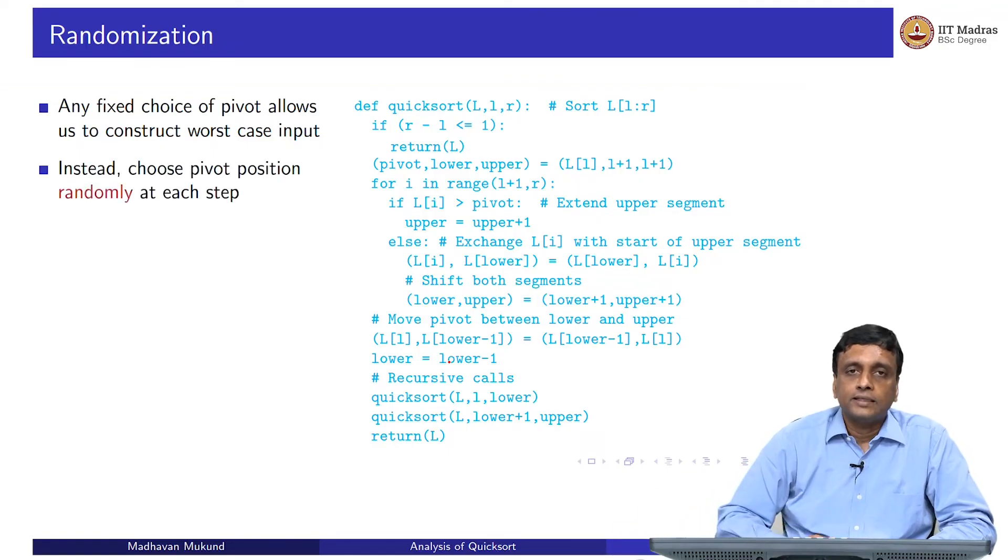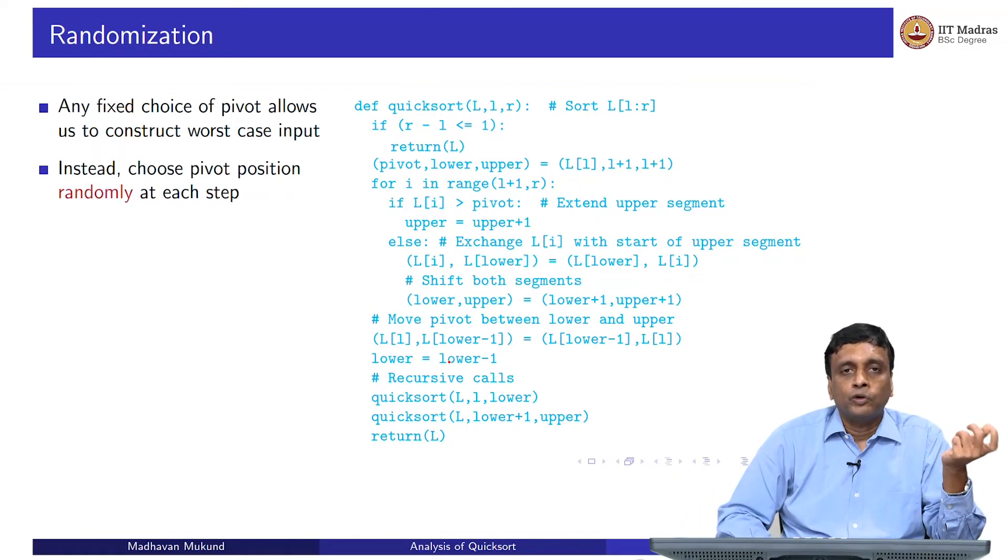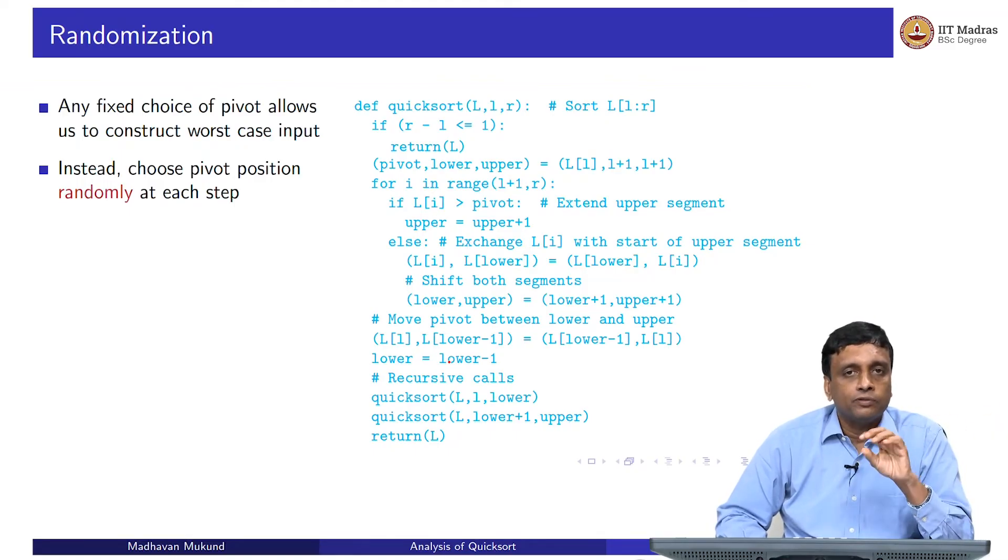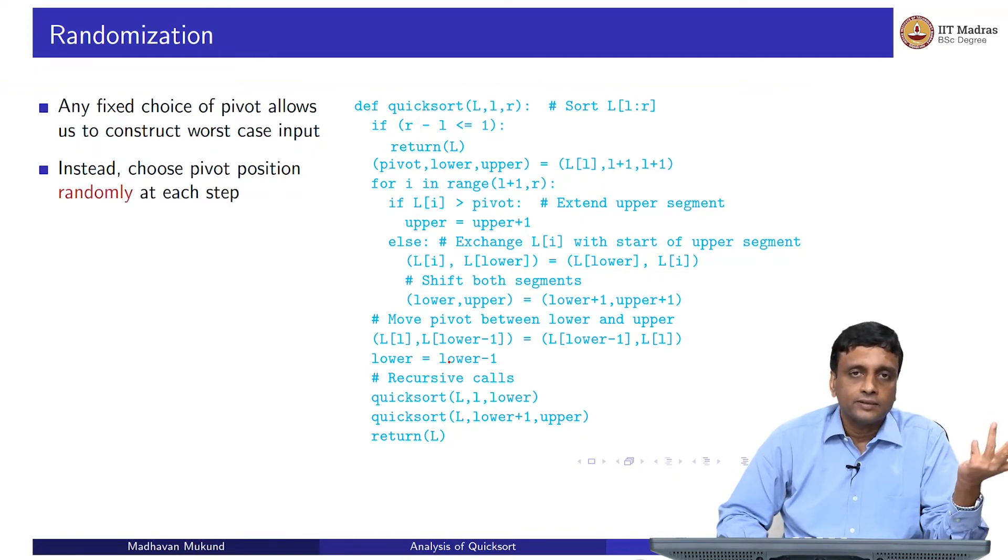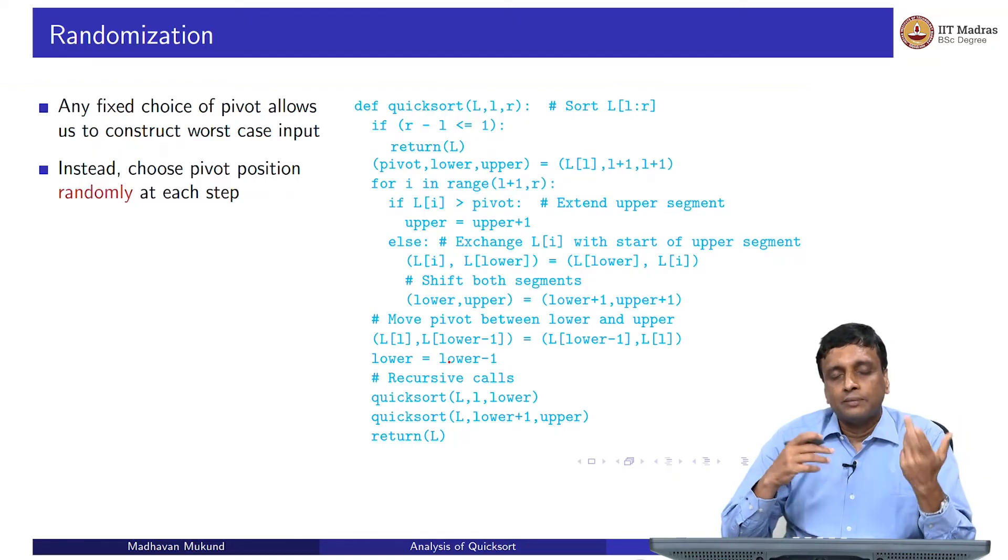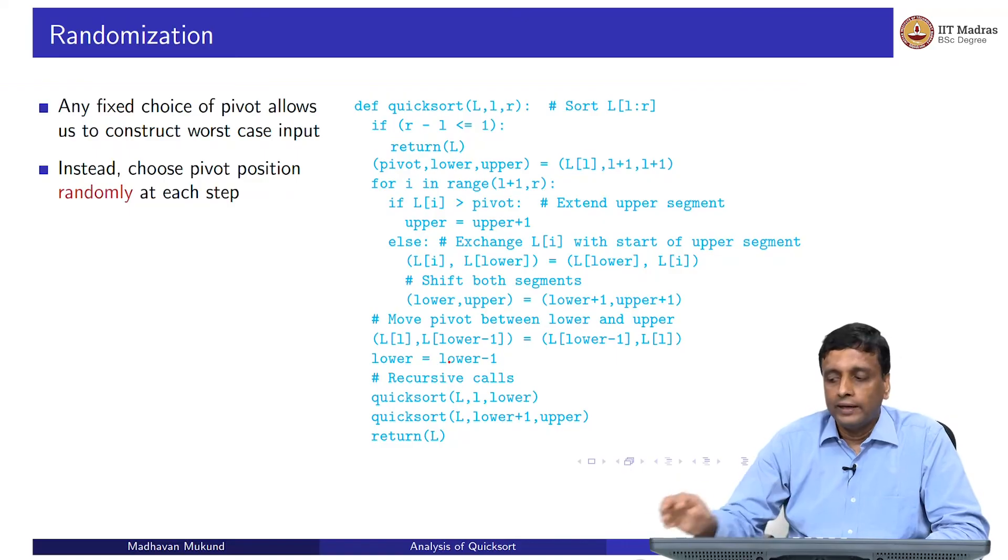So, what is the solution? You do not have a fixed strategy. At every time when you want to run quicksort, you do not fix a pivot by choosing the first, middle, or last element - you pick a random value between 0 and n minus 1 uniformly. You generate a random number uniformly with probability 1/n. Since you are picking the pivot at random, there is no way for somebody adversarial to give you a bad input.